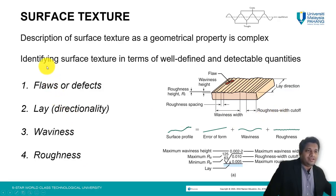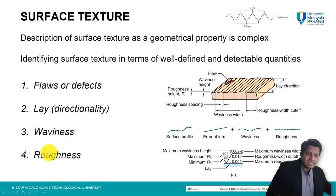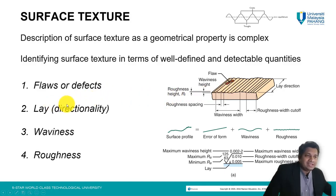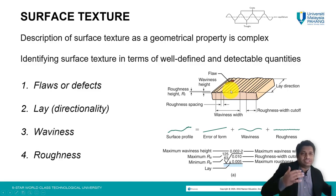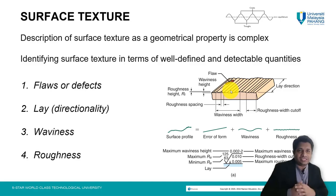When we talk about surface texture, we identify it based on four elements: flaws, lay, waviness, and roughness. Flaws are basically irregular irregularities such as scratches, cracks, or craters. Lay basically gives the directionality — the direction in which the whole surface is predominant, whether it is going upwards, wavy, etc. This is something which is defined by directionality.